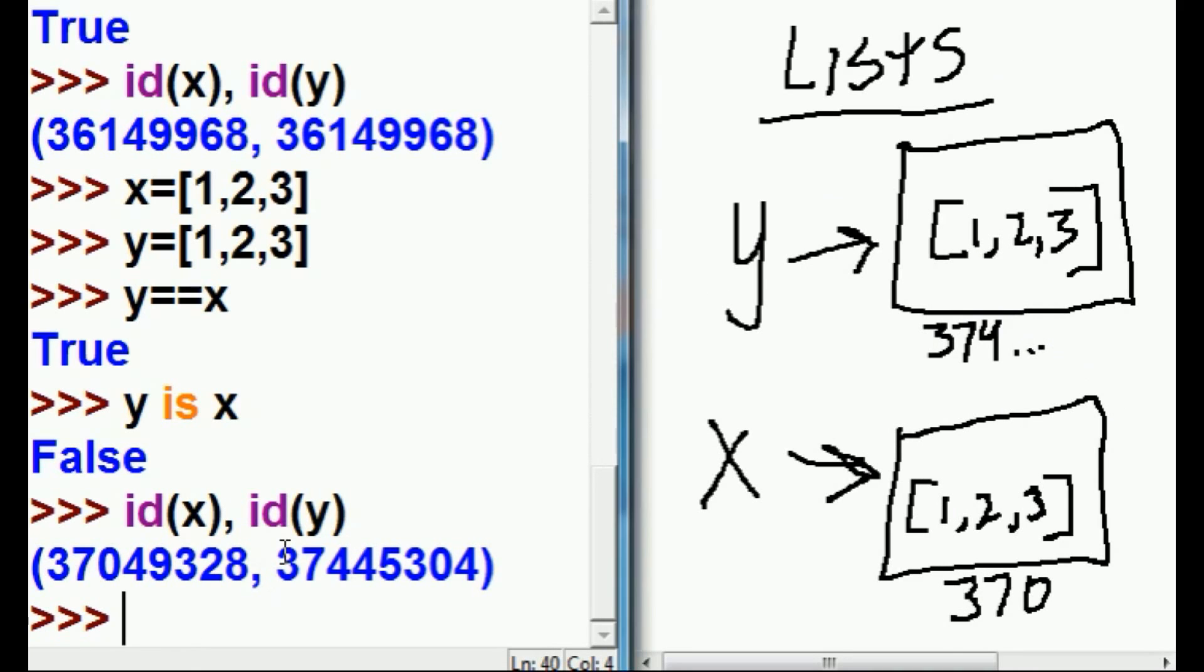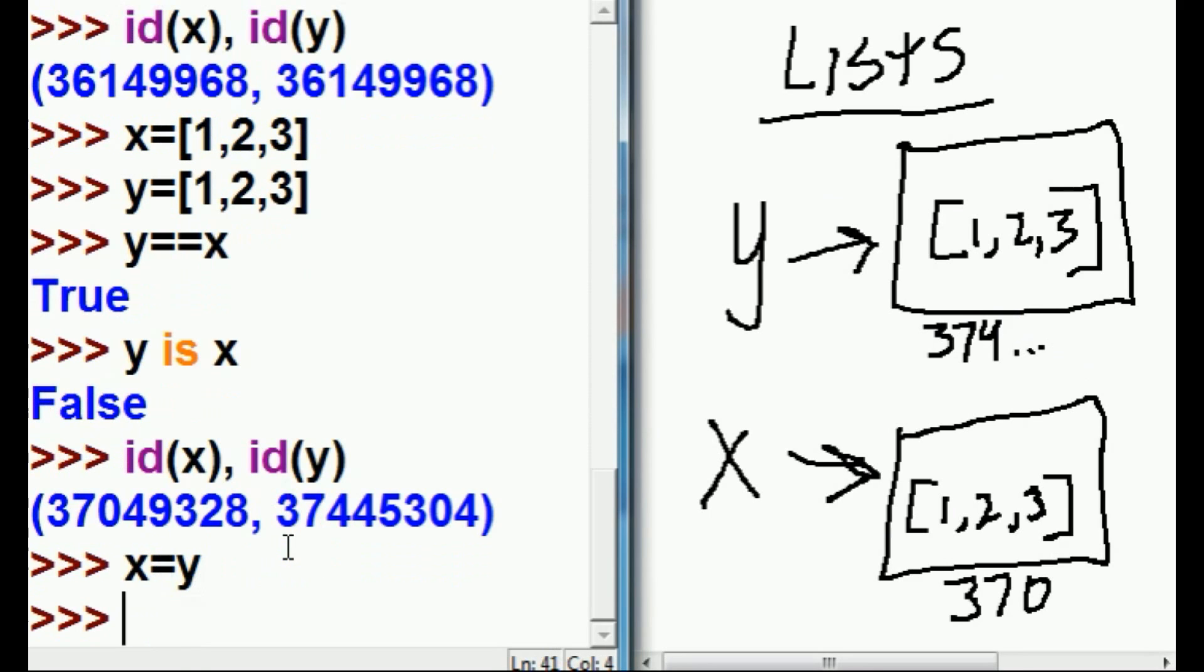What if I now throw a wrench into the machine? What if I now say, you know, x is that x guy? Yes, he's now equal to y. What happened now? This is what happened. x just got redirected over to y's address.